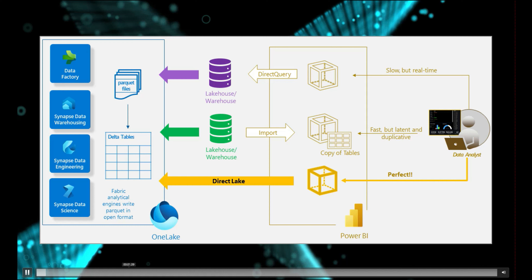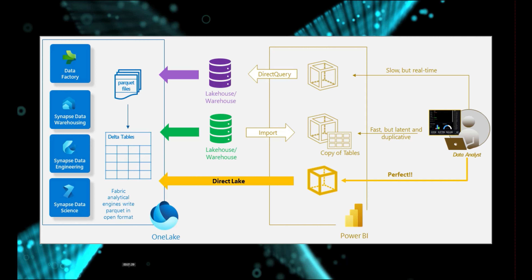When using Power BI Desktop the processing happens on the local machine, but in the Direct Lake model the data is not stored in Analysis Services — it is stored in OneLake, which makes it significantly faster. Internally, Direct Lake still uses the concept of Import mode, but the key difference is it does not copy the data into the Analysis Services layer. Once you have Microsoft Fabric and OneLake enabled, there is generally no need to use Import mode or Direct Query for most use cases.